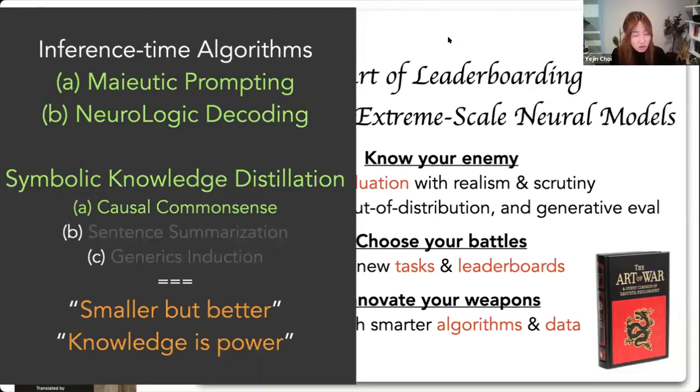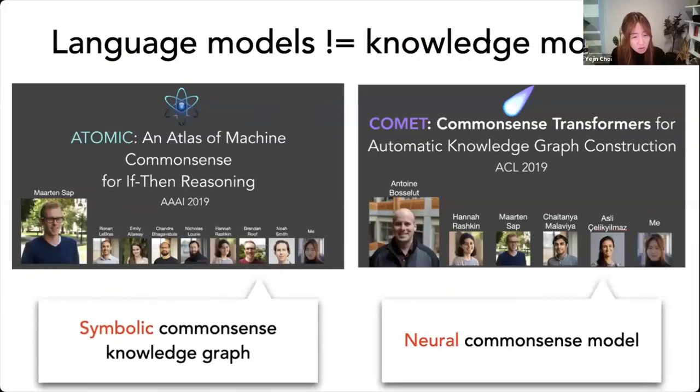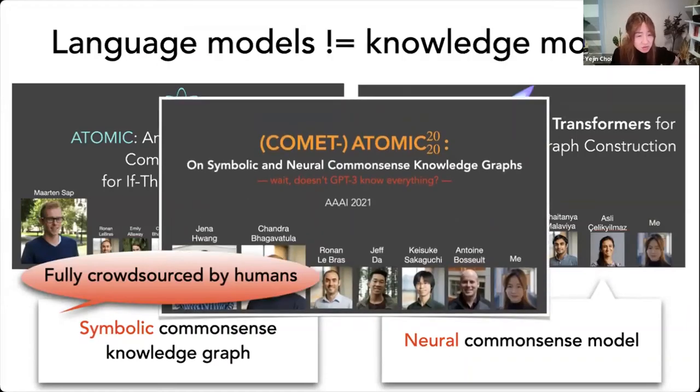And I will give another one called neurologic decoding later today, but let's first switch the gear and look at an example of a symbolic knowledge distillation. We'll come back to neurologic decoding because of the dependence later, but we start with causal common sense model. So this work builds on our previous work known as atomic and COMET, which are symbolic common sense knowledge graph and neural common sense model. And these are all from 2019. And atomic, which was the symbolic knowledge graph was a fully crowdsourced by humans up until two years ago. And then that enabled the training of a model like COMET, which is based on neural language models, but trained on top of this symbolic knowledge graph. And in the subsequent years, we also had COMET Atomic 2020, which is an enhanced version of these two.